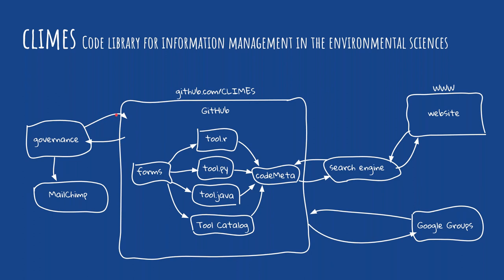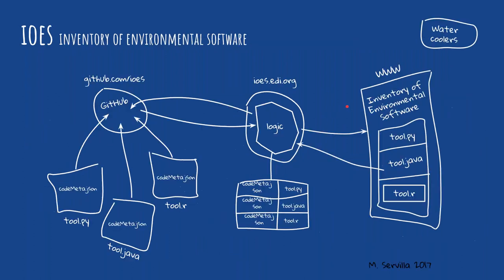Governance would encourage best practices, help with maintenance of the overall system if components or configurations need to be changed. One important role governance serves in the CLIMS configuration is a gatekeeper role — providing some assessment of the quality and determining which tier a particular tool belongs in, accommodating different levels of software maturity. Governance would also identify where the community is, what its needs are, what tools need to be developed for the future, and communicate this out to the community via a listserv.